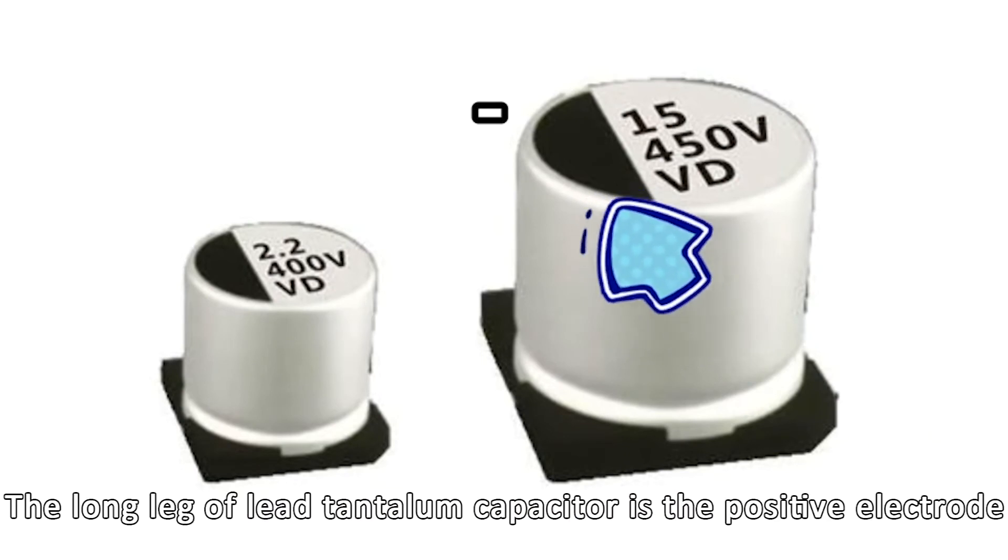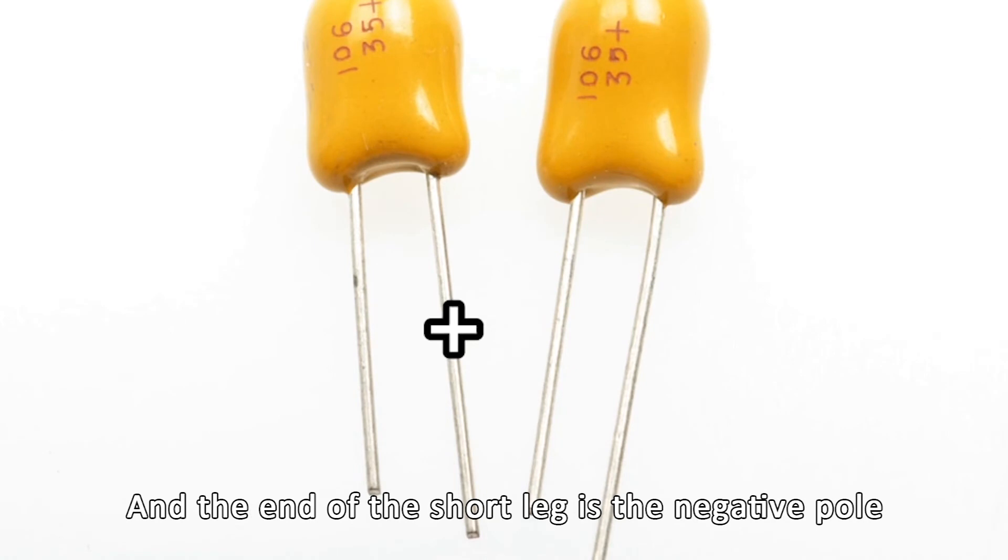The long leg of lead tantalum capacitor is the positive electrode, and the end of the short leg is the negative pole.